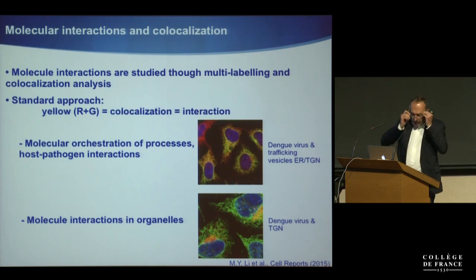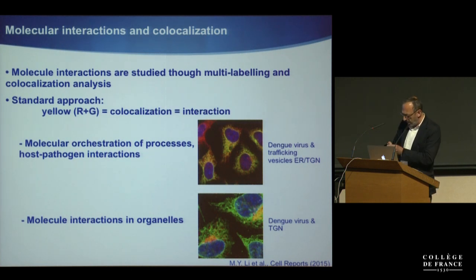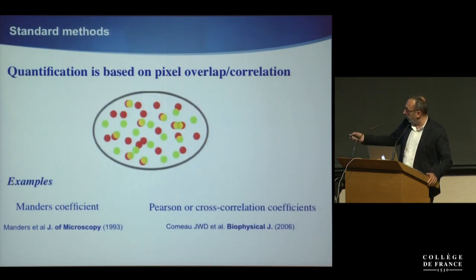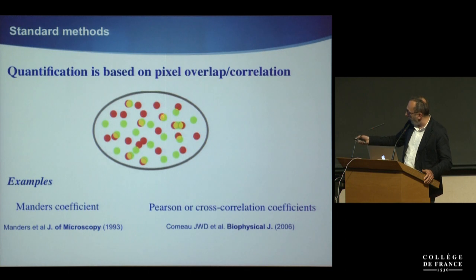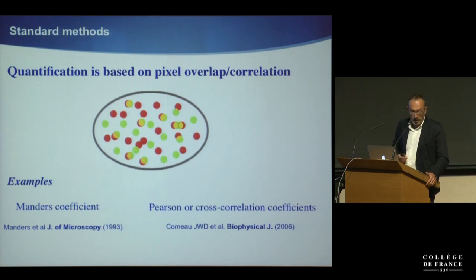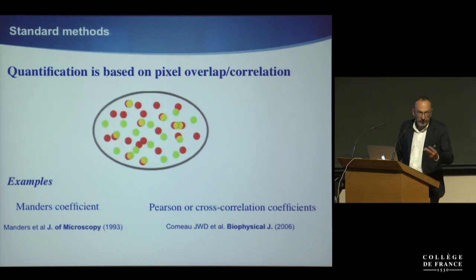This has been used for many different applications, in virology in particular, but also in standard cell biology to look at molecular interactions in organelles. Quantification — how many molecules are overlapping or co-localizing — is done by looking at the overlap or correlation between different colors. This has been done since a very long time. One of the first papers on this topic was published by Manders in 1993. There is the Manders coefficient, and also the Pearson cross-correlation coefficient, which are the traditional ways of quantifying co-localization.